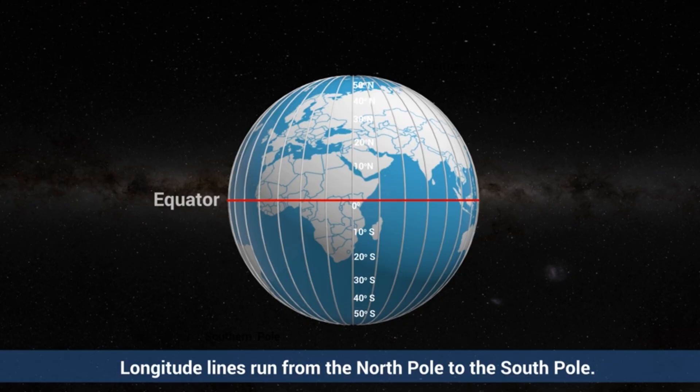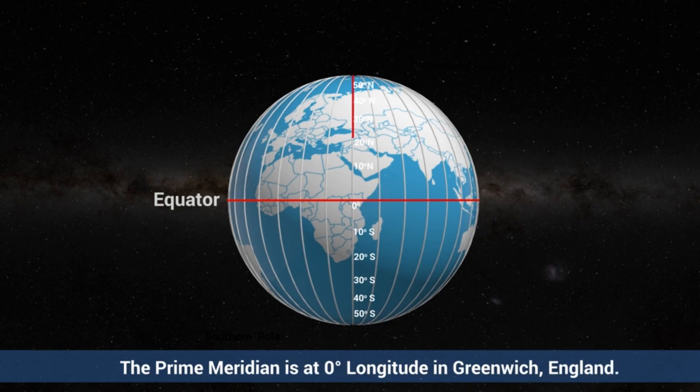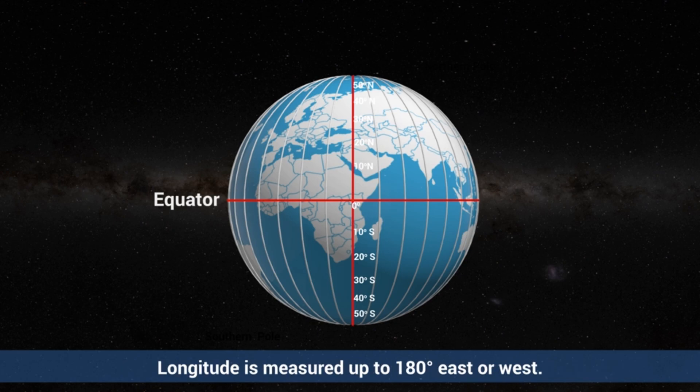Longitude lines run from pole to pole and measure how far a place is from the prime meridian, which is at 0 degrees longitude in Greenwich, England. Longitude is measured up to 180 degrees east or west, helping us determine a location's position on the east-west axis.